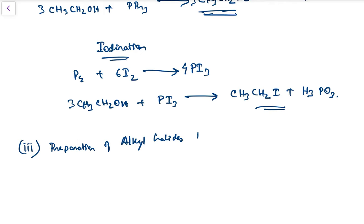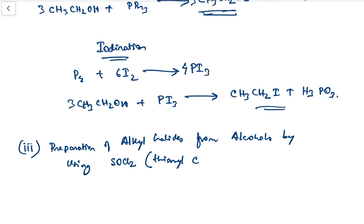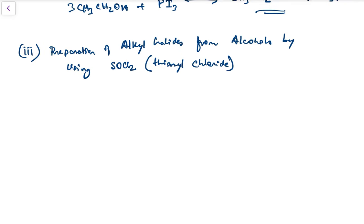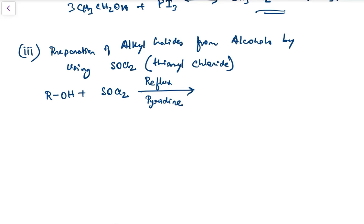The last process is preparation of alkyl halides from alcohols by using thionyl chloride (SOCl₂). It is a very simple reaction but the mechanism is a little different — it follows the SNi reaction. ROH is made to react with SOCl₂, and we reflux it in the presence of pyridine, forming RCl + SO₂ + HCl.